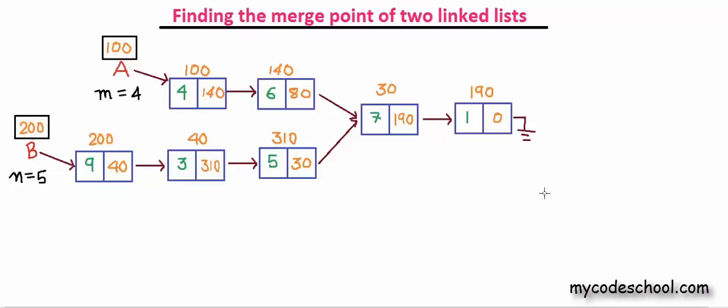So what is the first approach that comes to mind to solve this problem? The brute force approach would be to compare every node's address of list A with every node's address of list B. The first matching node would then be our merge point. So firstly we compare this first node's address that is 100 with the first node's address of B that is 200. We didn't find a match.